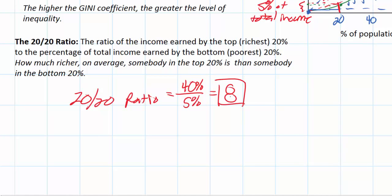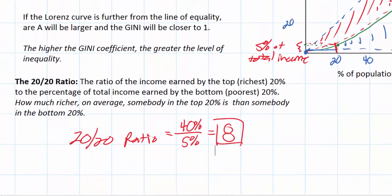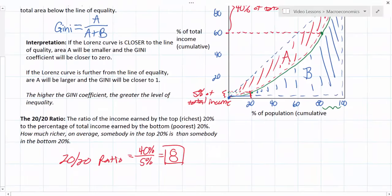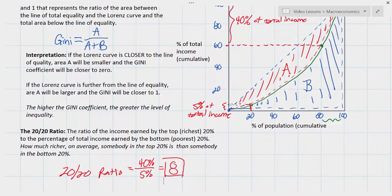Now what does that number tell us? How can we interpret different countries' 20-20 ratios? Again, this is some very easy to find public data. We'll have a quick look at some data for countries and interpret the 20-20 ratios for different countries in the real world.